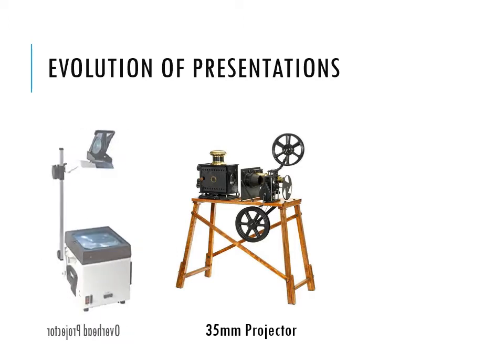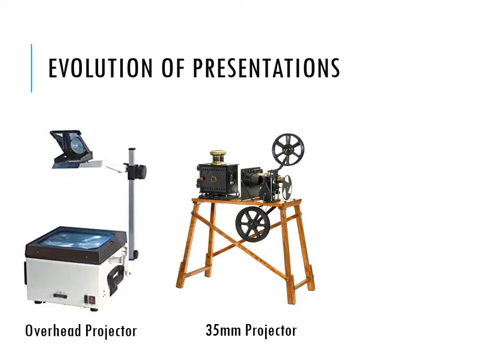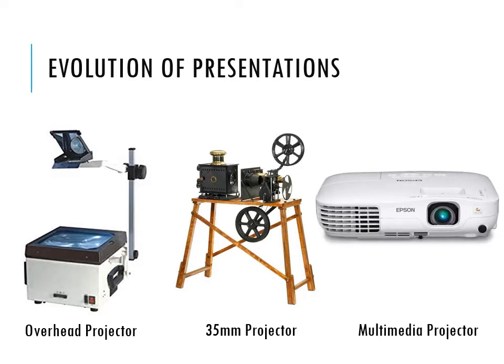We then moved from the 35 millimeter projector to the overhead projector. The overhead projector allowed a person to place a piece of paper with images or words onto a surface, which would then be projected onto a wall. However, you weren't able to hear audio or display video. The multimedia projector, which you may be familiar with from the lab, allows for multiple media forms — images, videos, and audio.